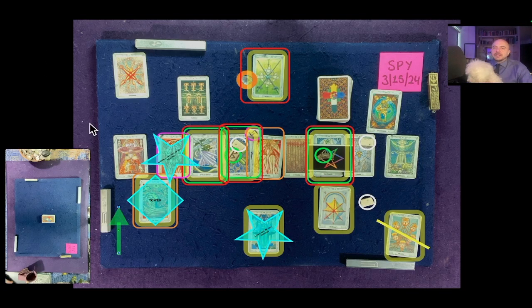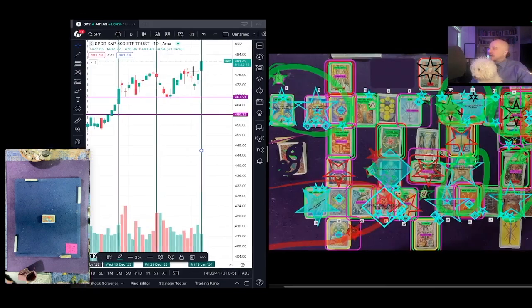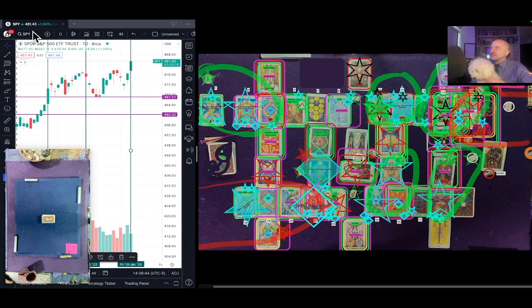This is the S&P 500 Spider ETF SPY one-day reading for March 15th, 2024. It's currently January 19th, 2024, 2:36 PM Eastern Time. SPY at the time of this reading is $481.43 USD.